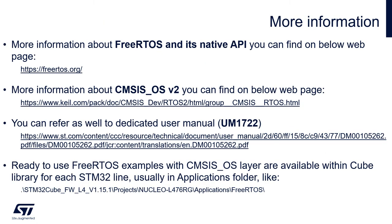More information about FreeRTOS and its native API can be found on the dedicated web page FreeRTOS.org. More information about CMSIS-OS version 2 can be found on the dedicated Arm/Keil web page — the link can be found below.